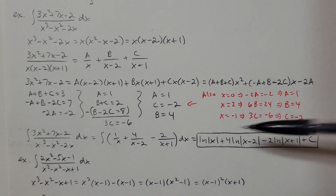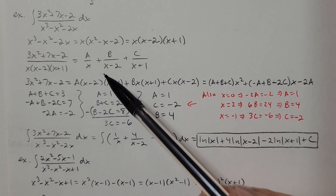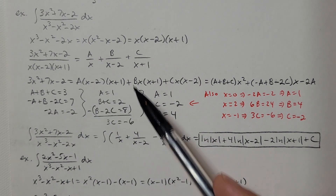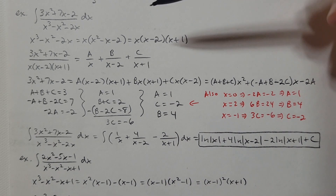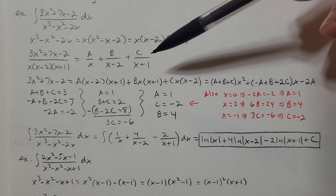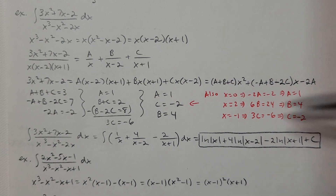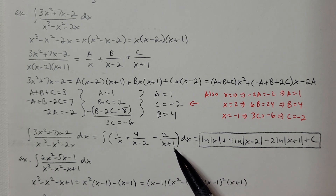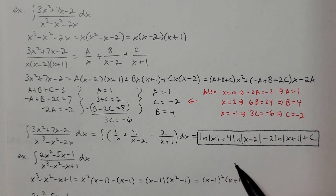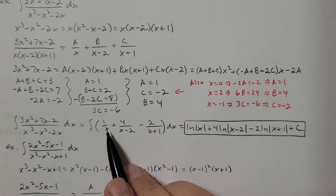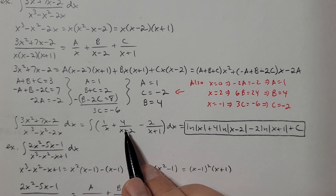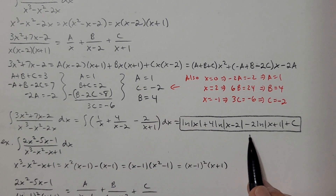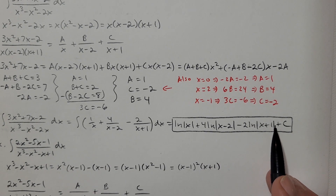Now, because these two sides are equal, and this is the function we're integrating, we replace it with 1 over x plus 4 over x minus 2 minus 2 over x plus 1. That allows us to go straight to the answer. We get ln of the absolute value of x — don't forget the absolute value bars — plus 4 times ln of the absolute value of x minus 2, minus 2 times ln of the absolute value of x plus 1, plus a constant.